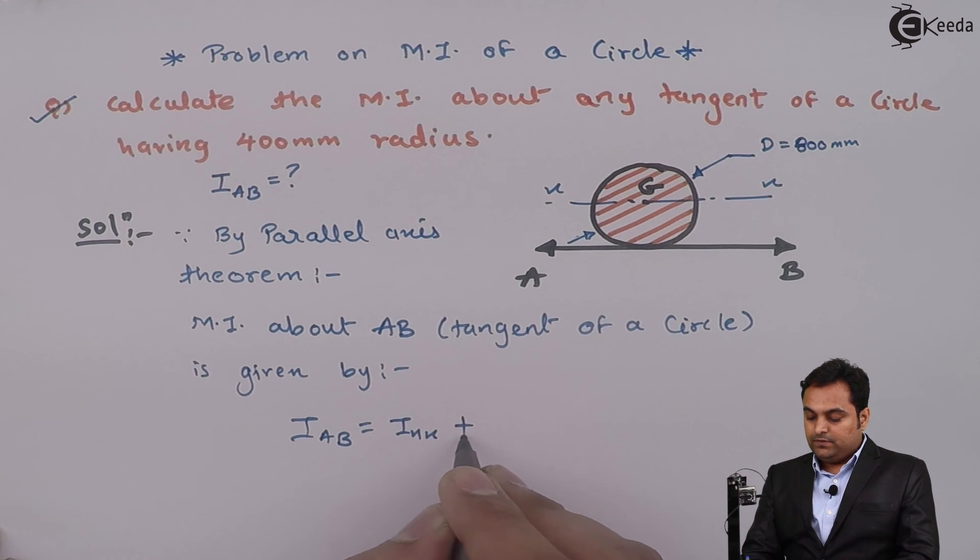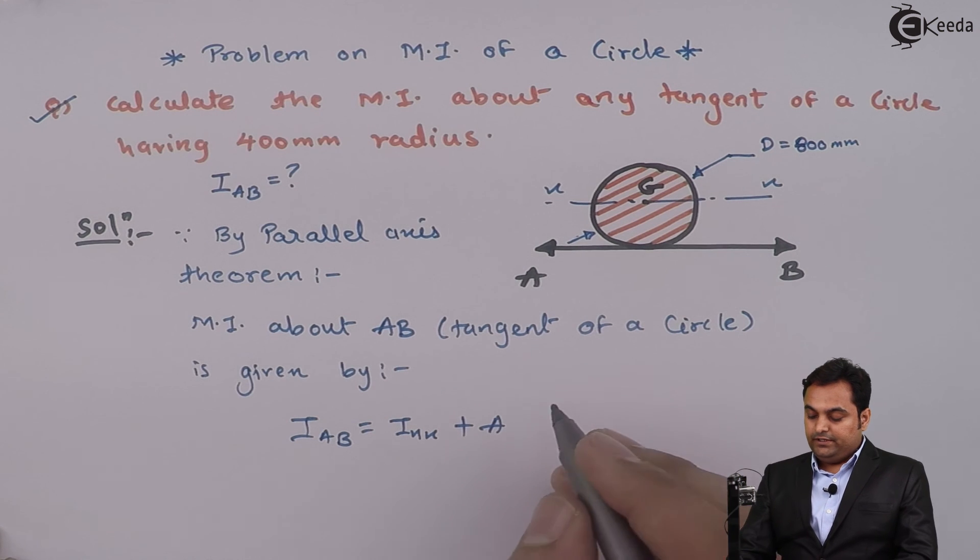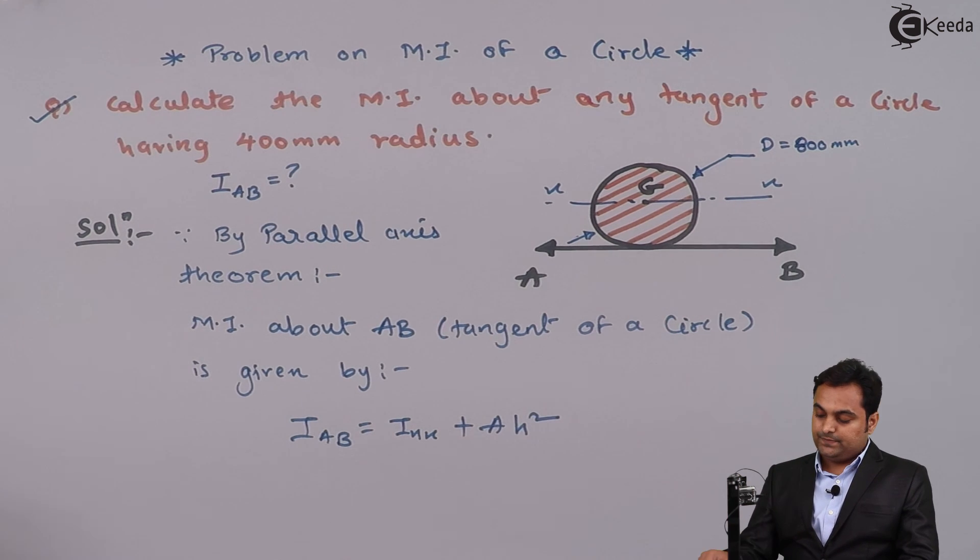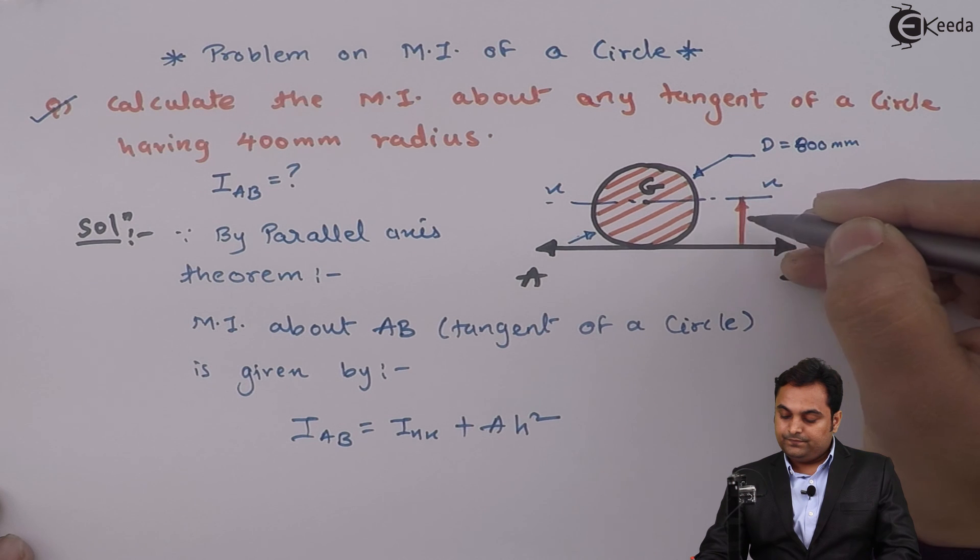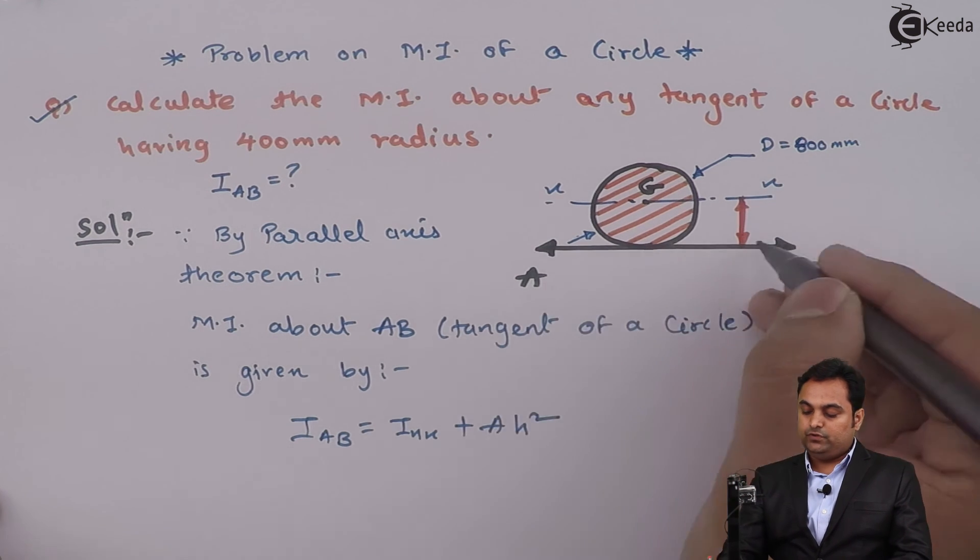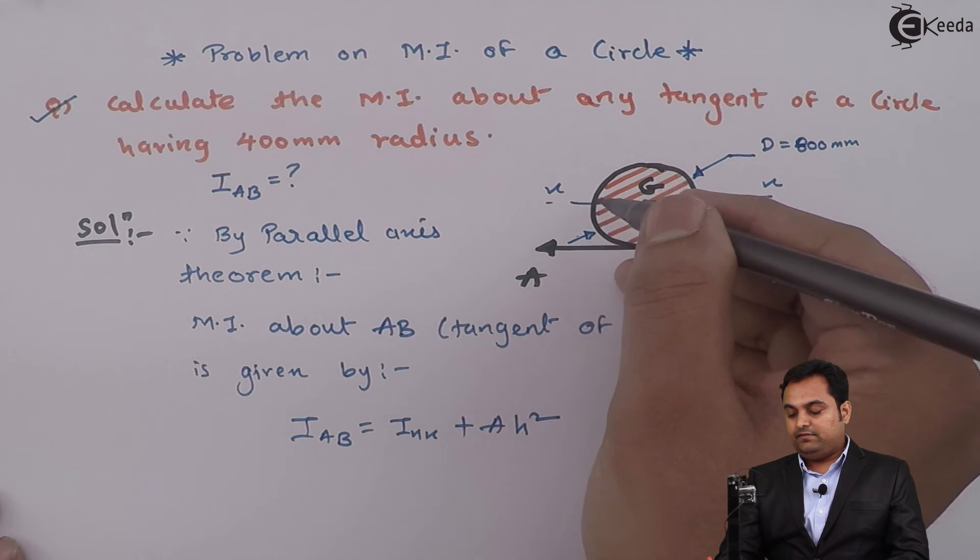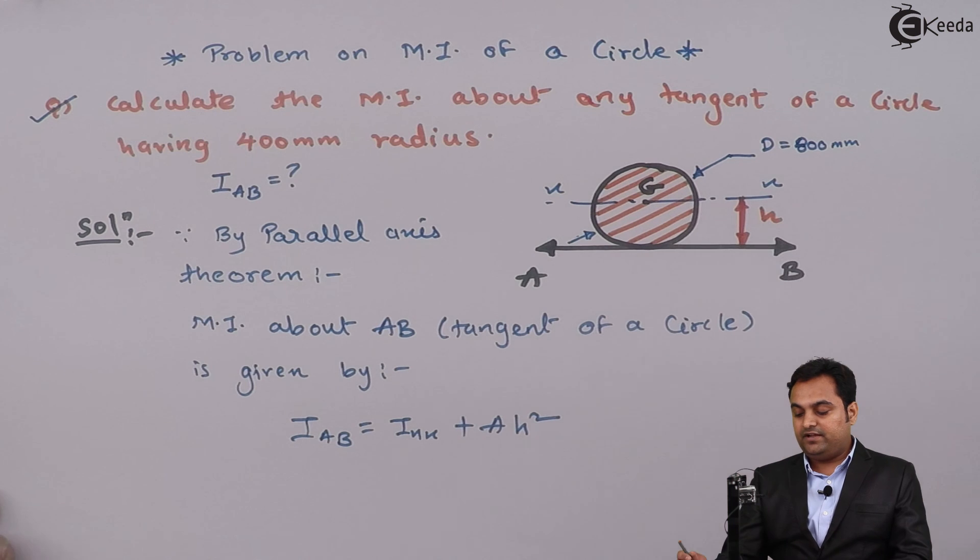I_x-axis plus area into h square. Now what is h? h is the distance between the two axes, that is the axis on which we want to calculate MI and to which it is parallel. So here I have distance h.